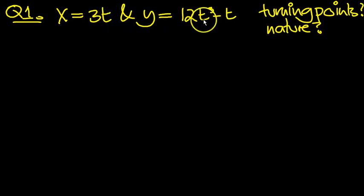x equals 3t and y equals 12t cubed minus t, and we need to find these things here. Let's have a look at this one then.